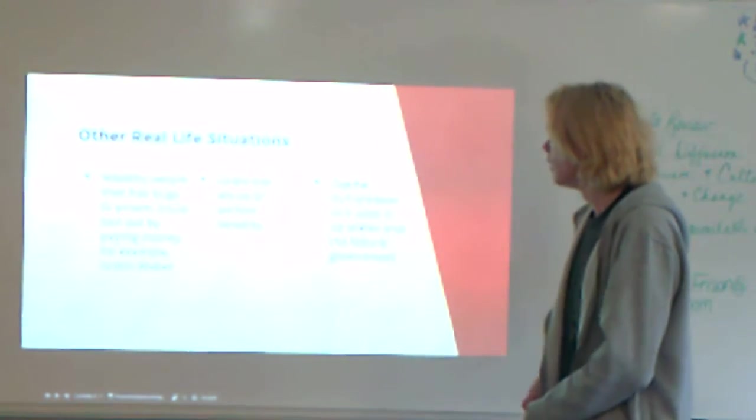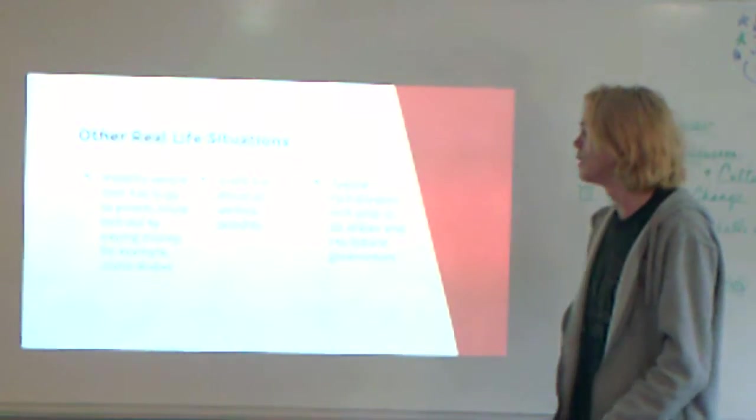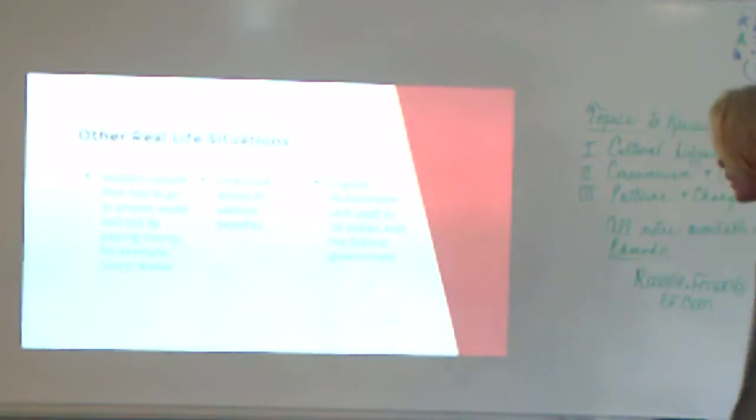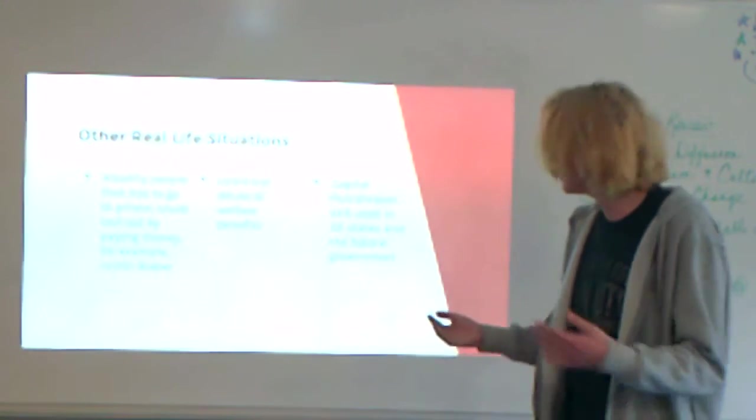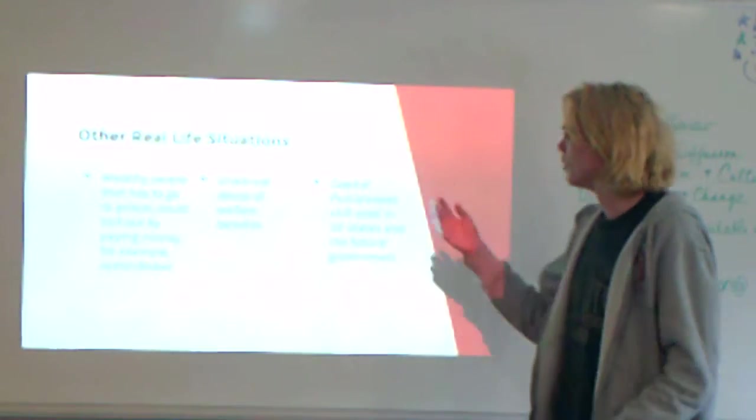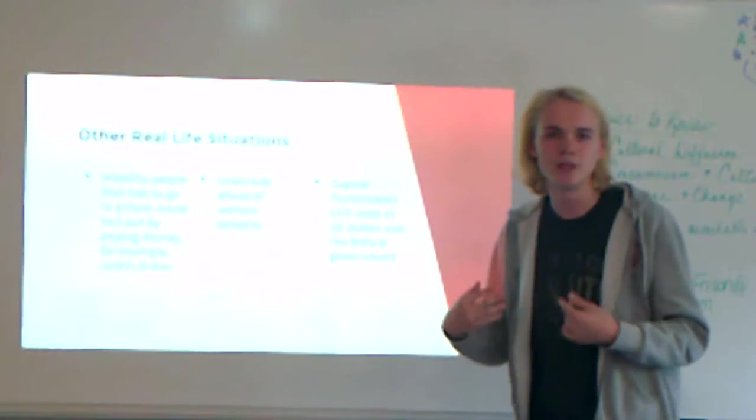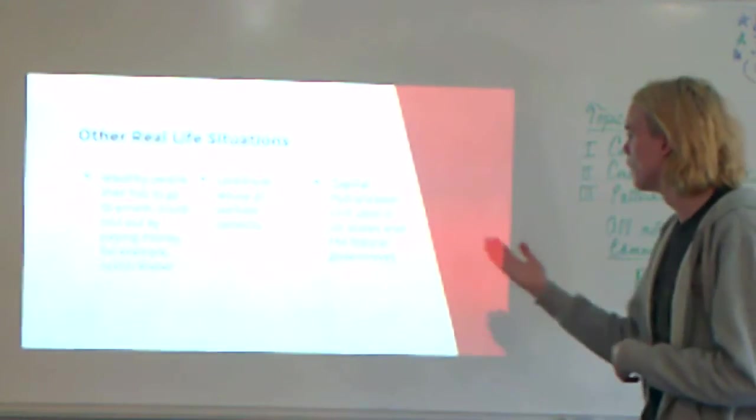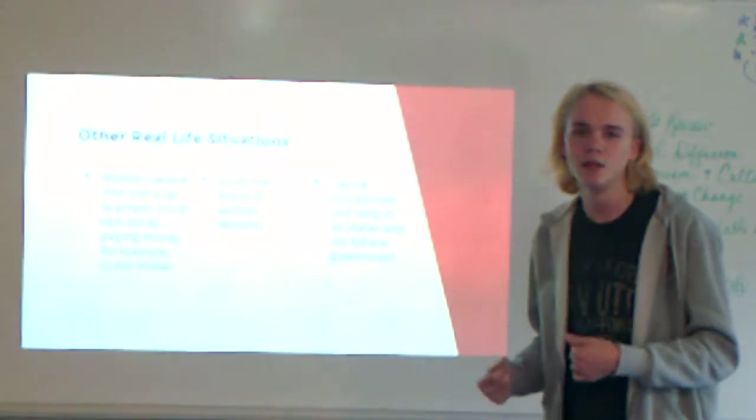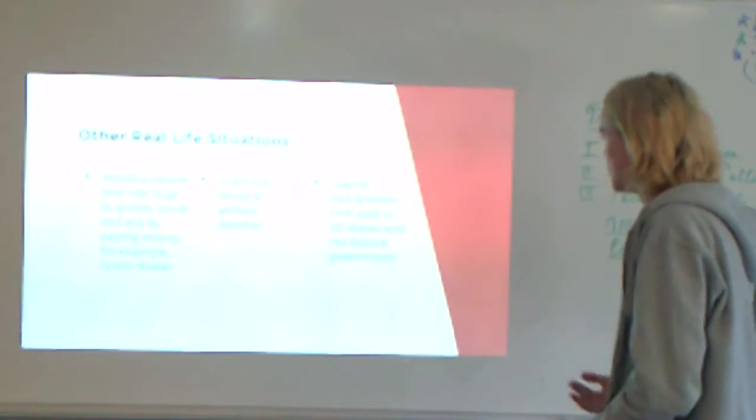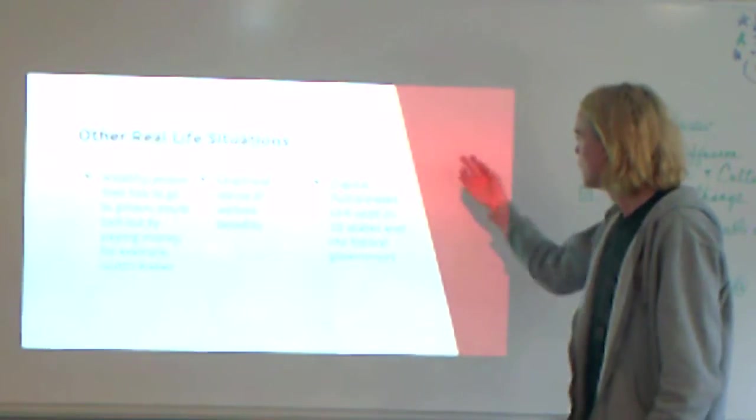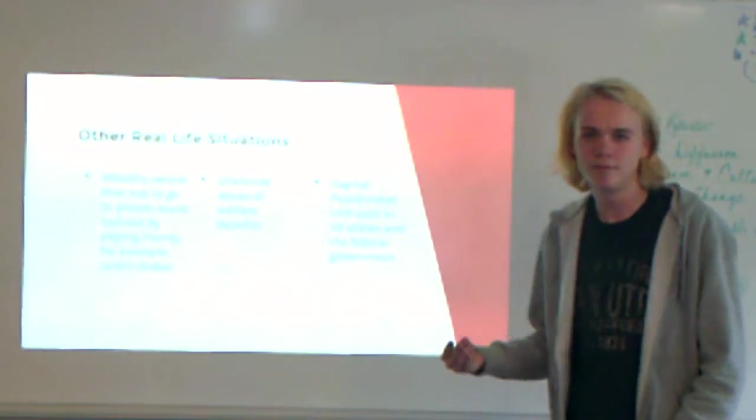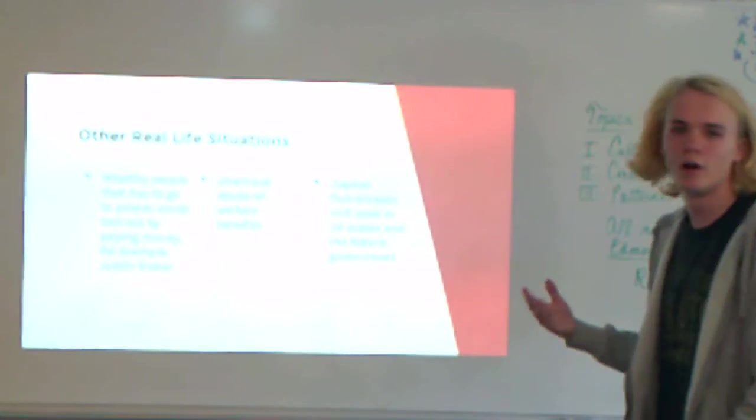So other real life situations. Wealthy people that have to go to prison could bail out by paying money. Justin Bieber has an example. He's paid out. This is bad. Why should, why should poor people, why can't they also get out of prison? And then an ethical abuse of welfare benefits, for example, you lie to the government that you're blind, or you can't work due to bad problems, just a major problem. And then capital punishment. It's still used in 32 states and the federal government. Now we're talking about USA. This is very old fashioned. US, I feel like US has to move on a little bit with their prison model.